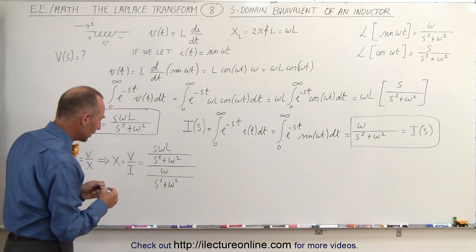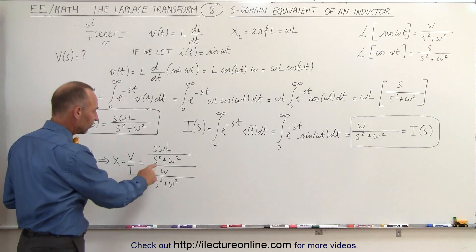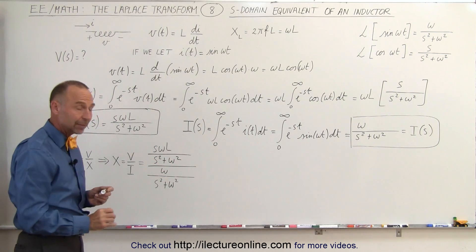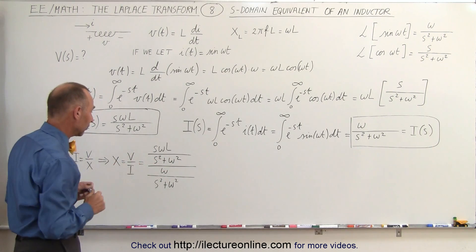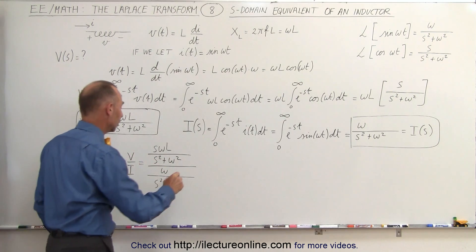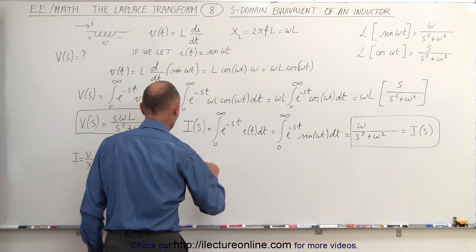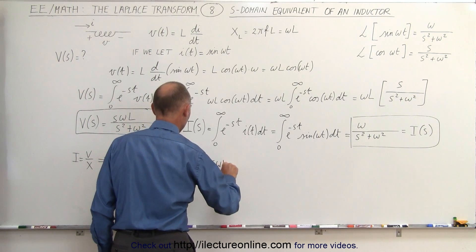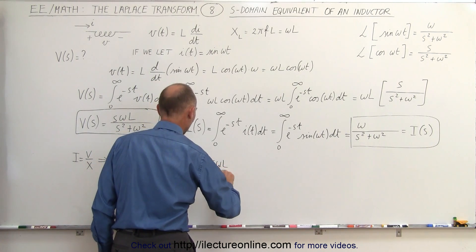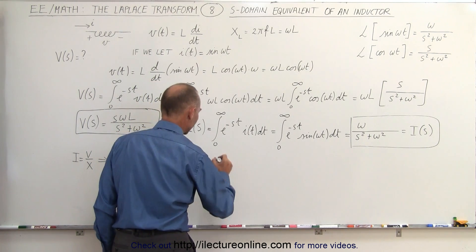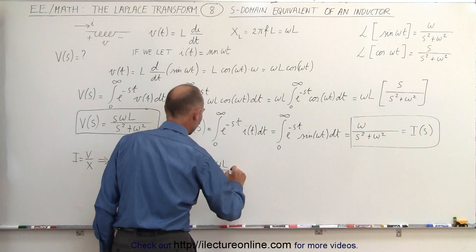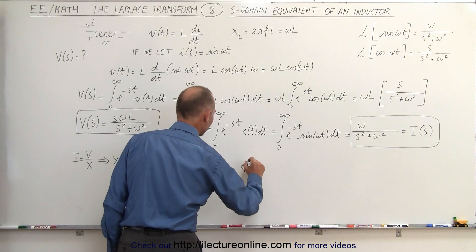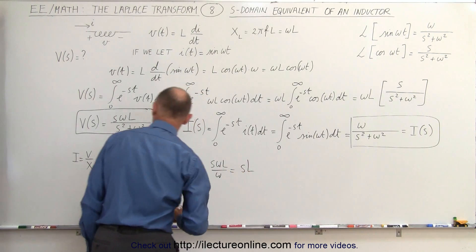For the numerator and denominator, S² plus ω² cancels out, leaving us with SωL over ω. The omegas cancel out, which gives us S times L.